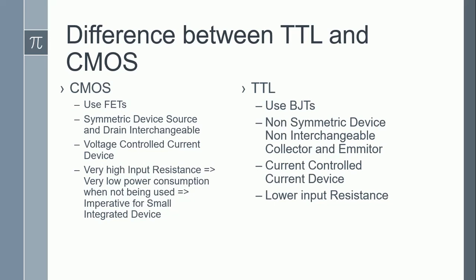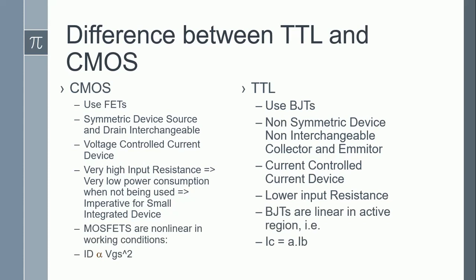The next difference: MOSFETs are non-linear in working conditions. As you can see from the equation, ID is directly proportional to VGS squared. Since VGS is the controlling voltage, this gives a non-linear relationship between ID and VGS. On the other hand, in TTL the equation is IC equals alpha times IB, which is a simple linear relationship.